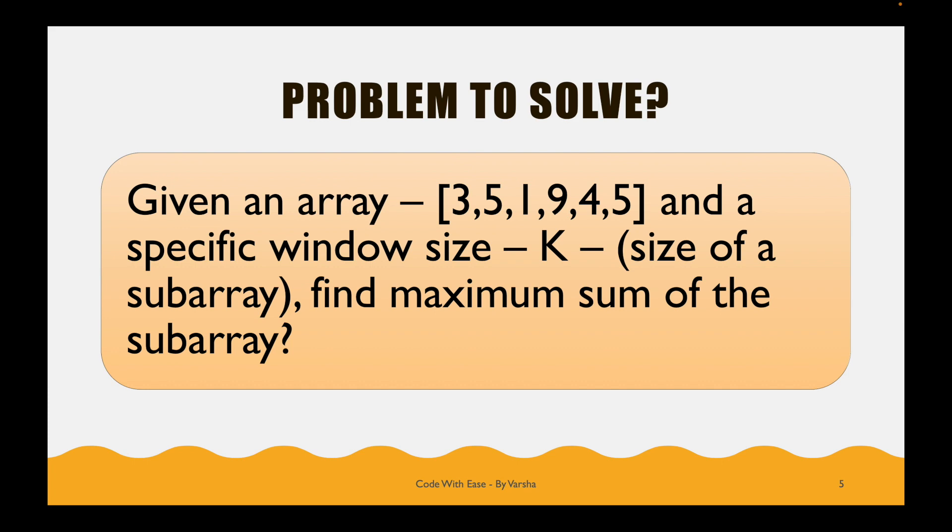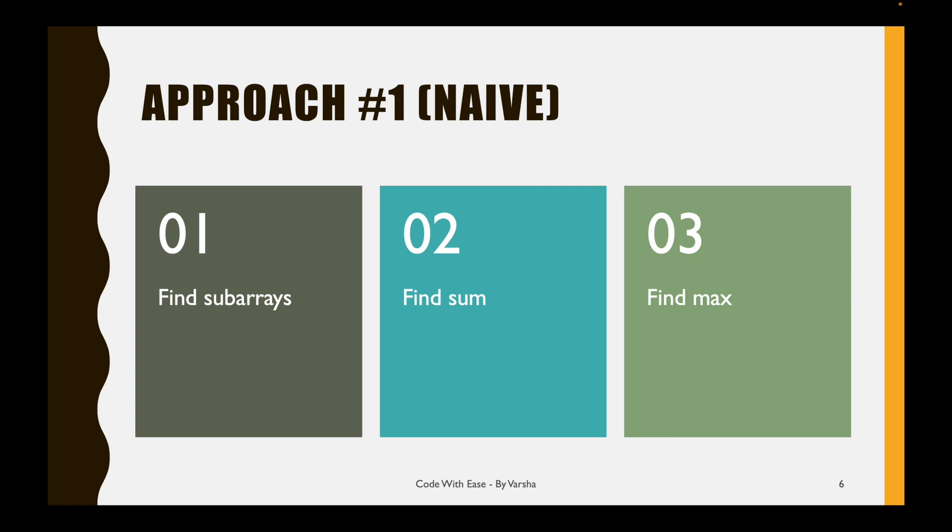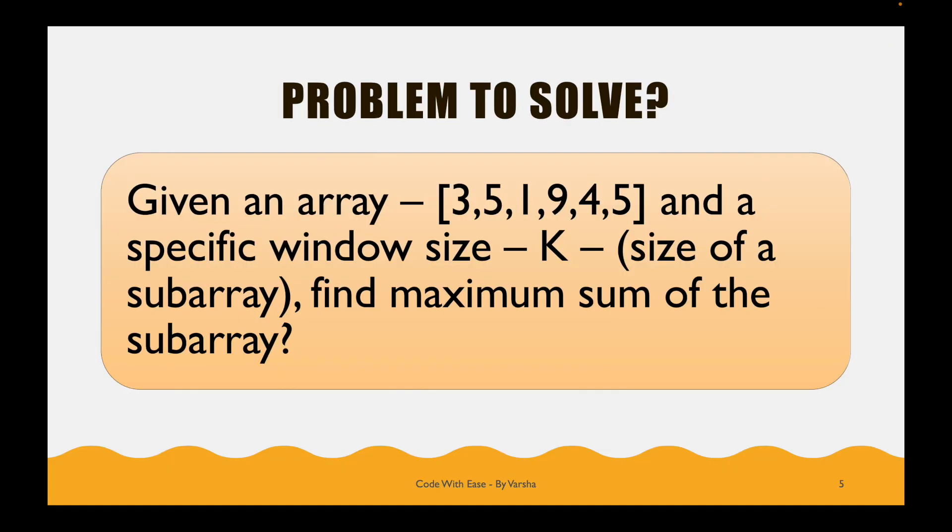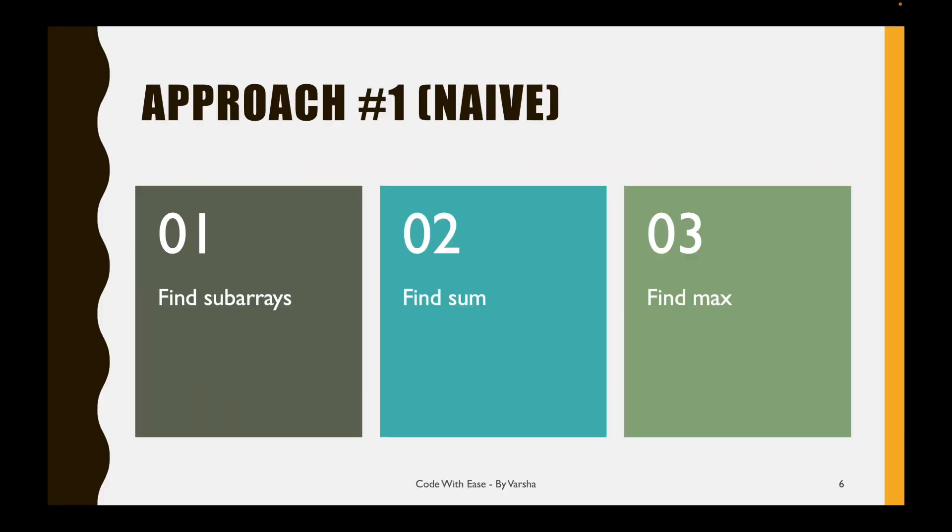Let's solve this in the most brute force, naive way. We have broken the problem into three steps: first, find all subarrays with the given window size k; second, compute the sum of each; and third, from those sums compute the maximum sum.